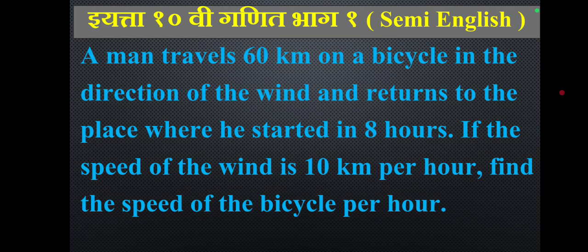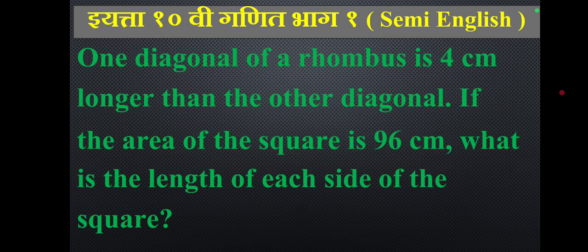A man travels 60 km on a bicycle in the direction of the wind and returns to the starting place in 8 hours total. If the speed of the wind is 10 km per hour, find the speed of the bicycle.